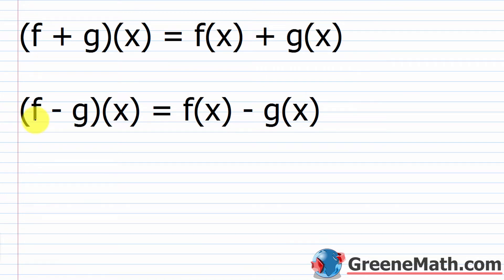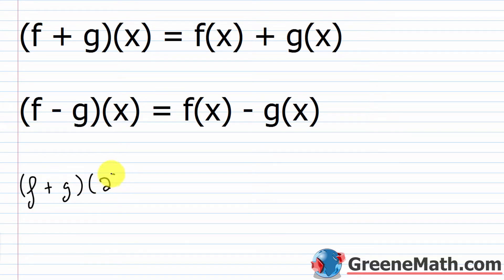If you see something like (f + g)(x), all this is telling you to do is take f of x and add g of x — you're just combining like terms. It's the same thing if you see (f − g)(x): that is f of x minus g of x. They'll also ask for things like (f + g)(2), which means find f of x plus g of x, then plug in a 2 everywhere there's an x.